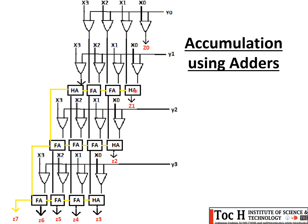At the first point in the adder row, there are two inputs from the AND gates, so we use only a half adder. At the next point, we have one input from one AND gate, one from another AND gate, and a carry from the previous adder stage — three inputs — so we use a full adder. At the following stage, again three inputs (two from AND gates plus a carry), so another full adder is used. At the final point of the row, with only two inputs (one AND gate output and a carry), a half adder suffices.